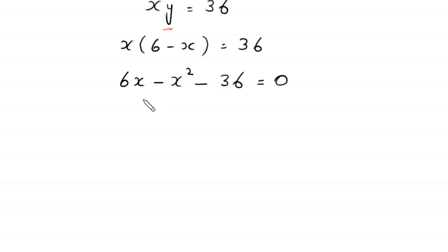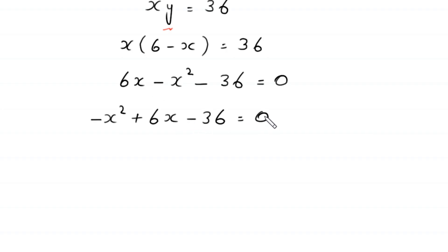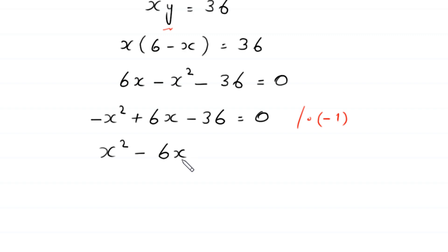We rearrange the terms: negative x squared plus 6x minus 36 equals 0. Now we multiply both sides by negative 1. This gives positive x squared minus 6x plus 36 equals 0. This is a quadratic equation and is not factorable, so we solve it using the quadratic formula.